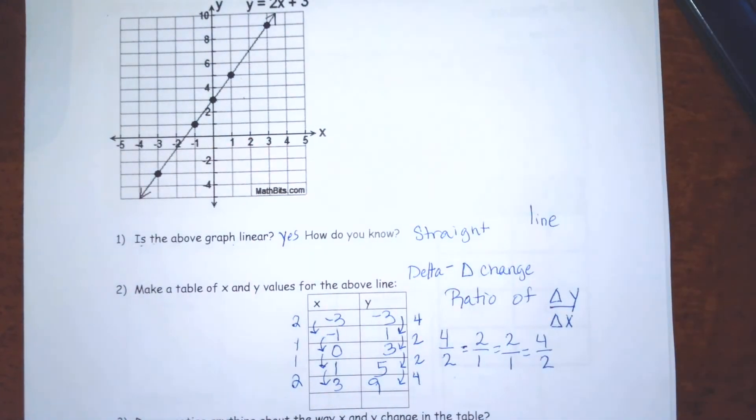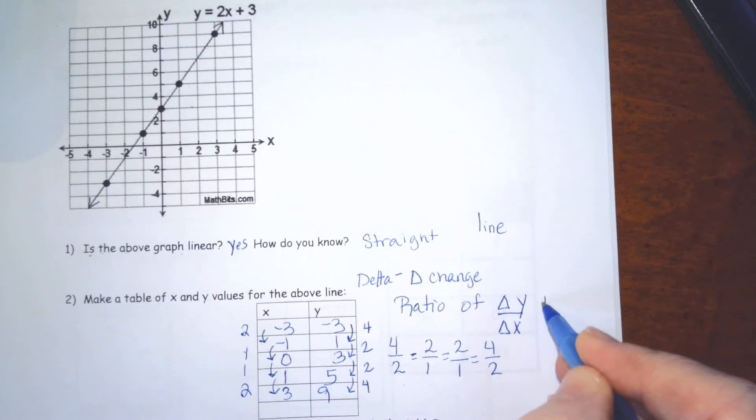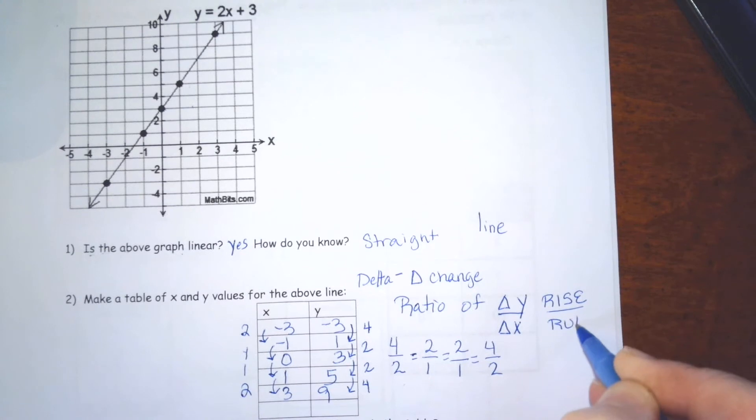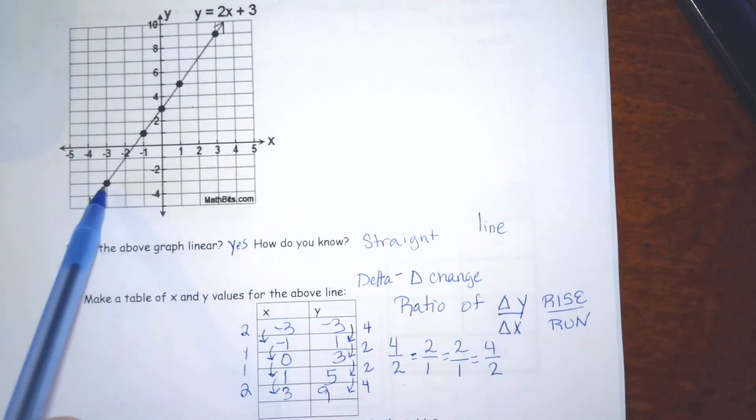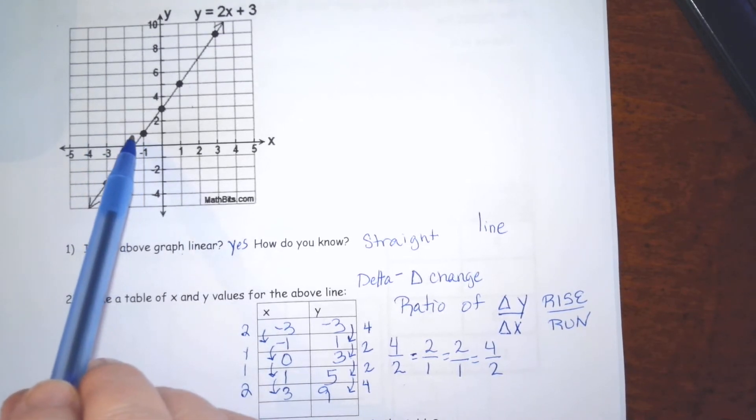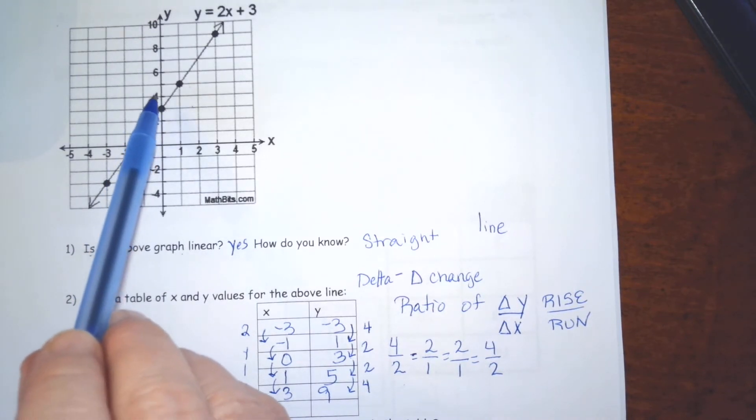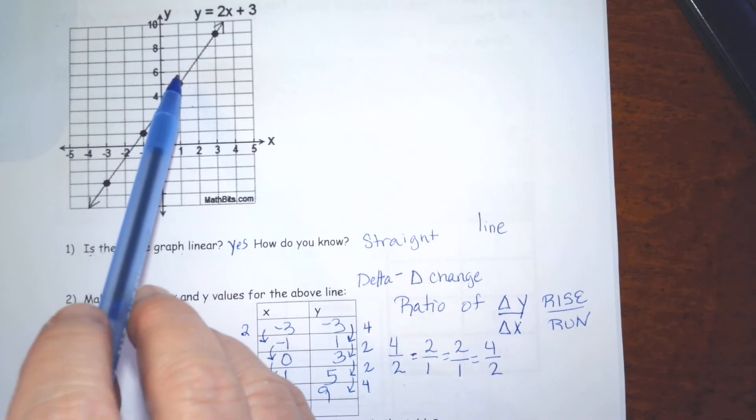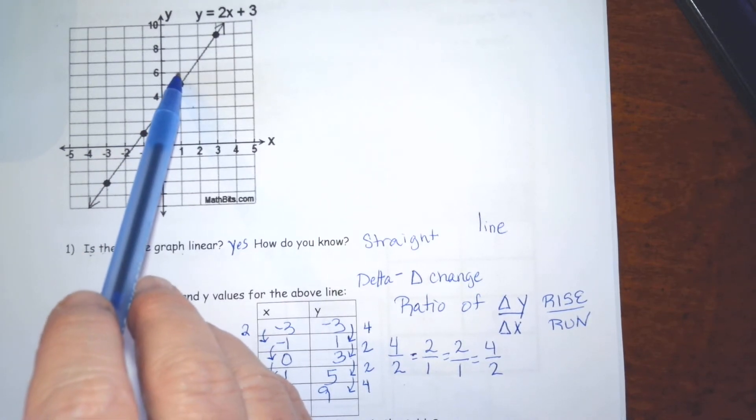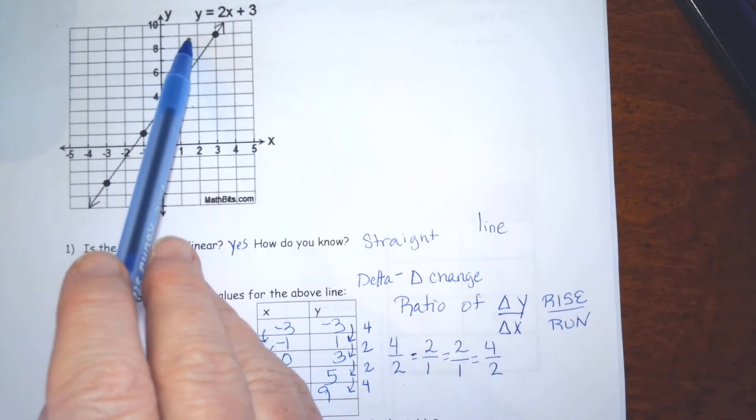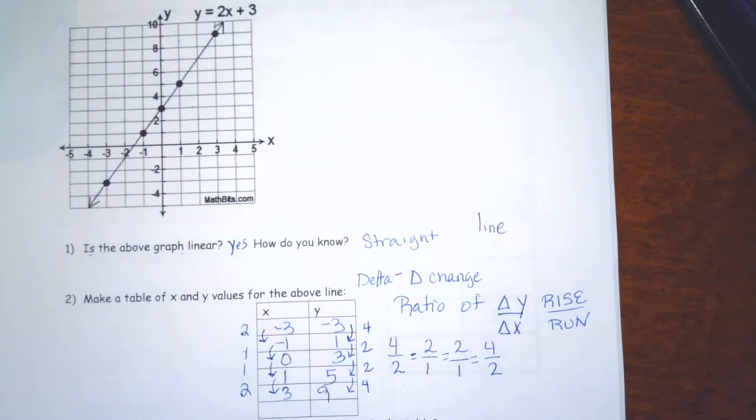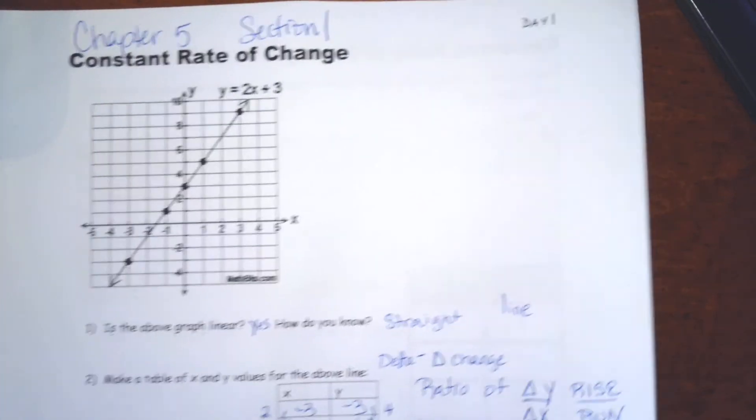Remember, it's the change in the y over the change in the x. You might also want to write this in. It's called the rise over the run. And we always moved up because that's the y change. And then over because that's the x change. Up 2 over 1. A rise of 2. A run of 1. A y change or a vertical change of 4. A horizontal or x change of 2. Okay. Let's turn the page.